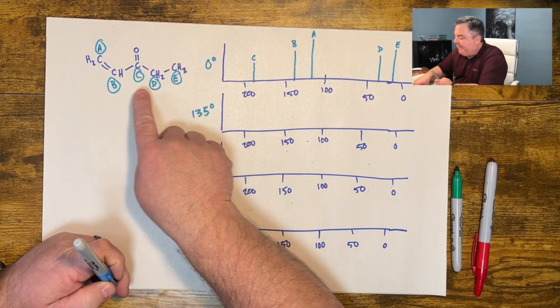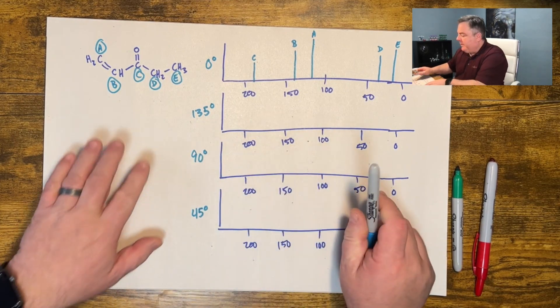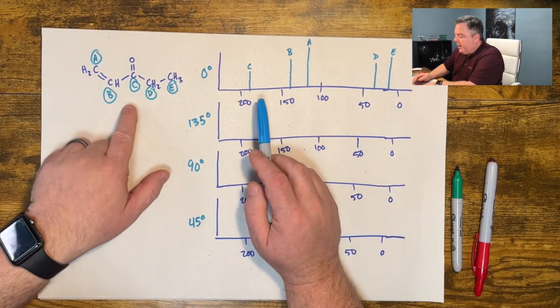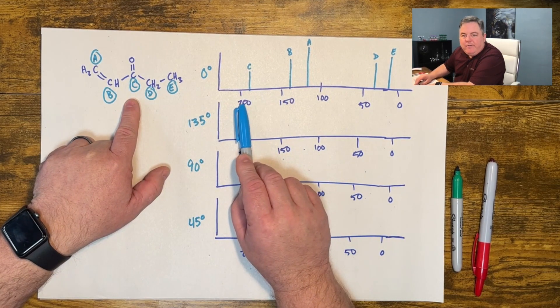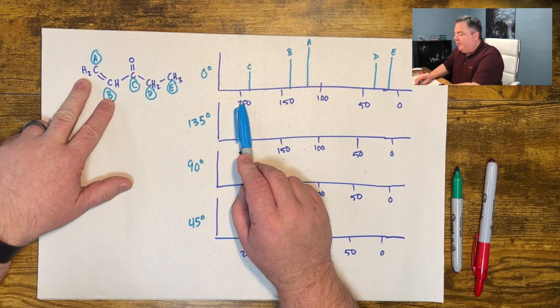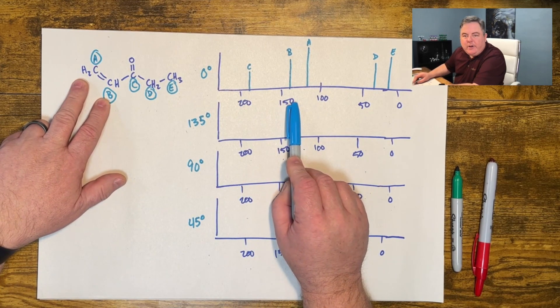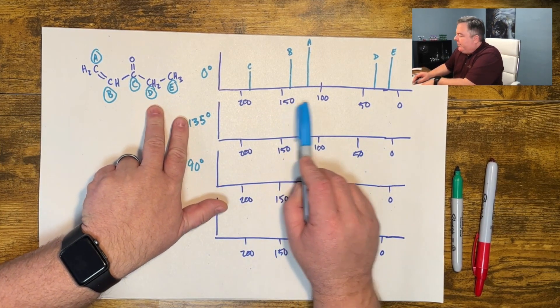In that last video we looked at this compound. There were five different carbon atoms in this compound. One of the carbons labeled C is a carbonyl between 150 and 200. Two of them were double bonded carbons between 100 and 150.